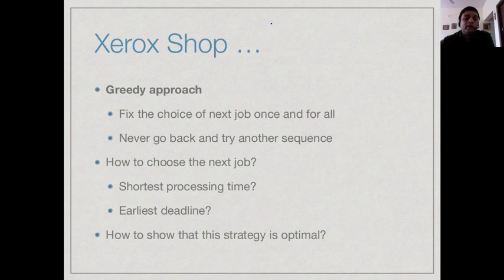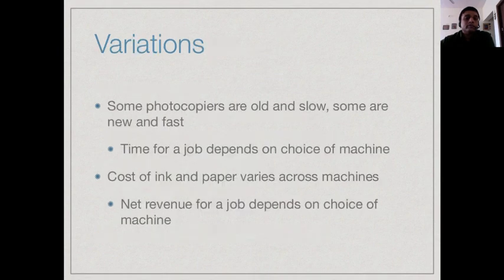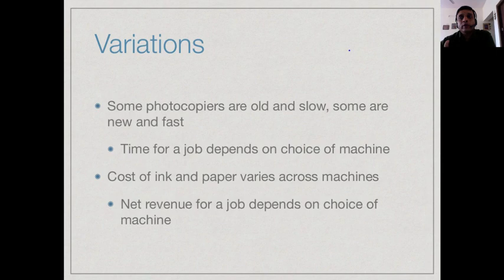Will we always get the best possible return by choosing a given strategy? As we saw with the airline network problem, the basic problem has many different variations. For instance, if the shop has many photocopiers, it's reasonable to assume some are new and some are old, and the newer ones may work faster. Therefore the time it takes to finish a job depends on which machine the job is put on. So with this additional complication, does the strategy we chose for the uniform-machine case still hold, or do we need a different strategy?